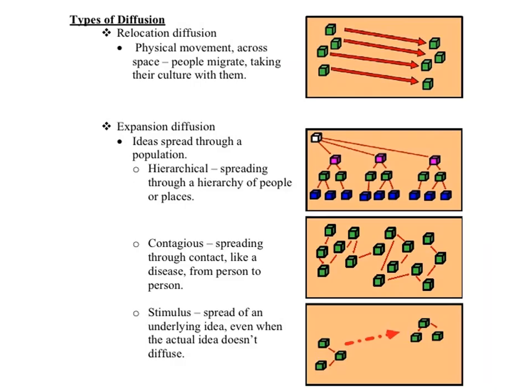To recap all the different types of diffusion: relocation diffusion involves the physical movement of people taking culture with them. Expansion diffusion spreads ideas through population without the person needing to keep moving. Contagious spreads through contact — the best example is a disease. Stimulus diffusion spreads the underlying idea, not the specific thing itself. If you ever get confused, go back through this slideshow and look at the different graphics.